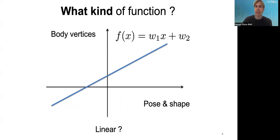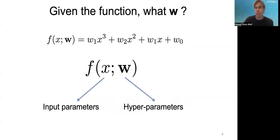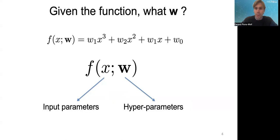We said we'll train the body model using 3D scan data. The question is: what is our model — a linear function of pose and shape mapping to body vertices, or a polynomial function? Given a chosen function, how do we fit the hyperparameters (the W's) using training data to minimize model-to-data error? Do you think linear or polynomial would work well?